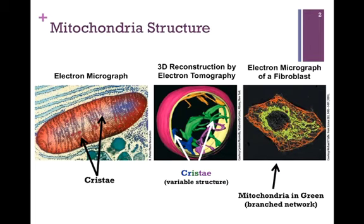Let's look first at the structure of the mitochondrion. On the far left, we have an electron micrograph showing an individual mitochondrion, and the cristae, or folds of the inner membrane, are highlighted by the black arrows. However, we can't see anything about the three-dimensional structure. For that, we need the electron tomograph shown in the center.